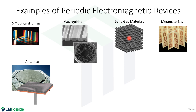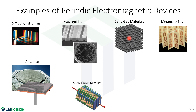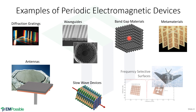All the periodic structures I've been talking about can be incorporated into antennas to do all kinds of cool things. Slow wave devices: we can design periodic structures that interact with a wave in really interesting ways, and we can slow waves down so that you can actually walk faster than the electromagnetic wave propagating through these things. Maybe some of the most famous periodic structures are what's called frequency selective surfaces, and it's one of the things that makes stealth aircraft stealthy.